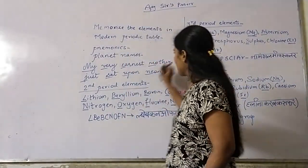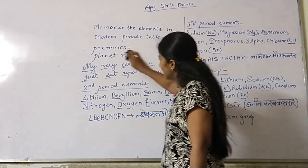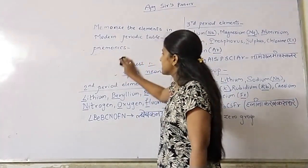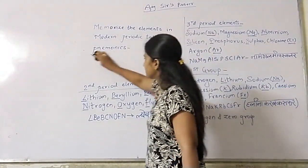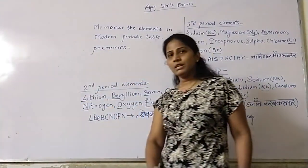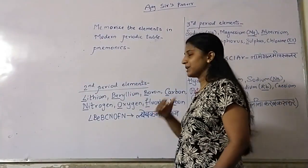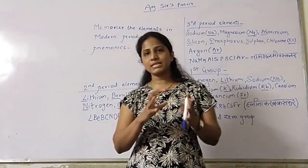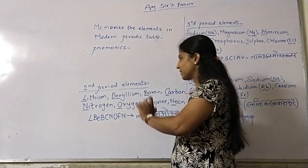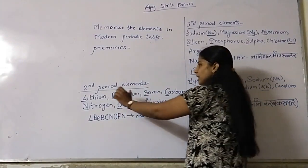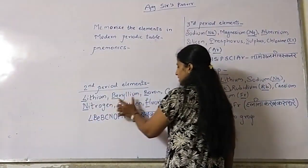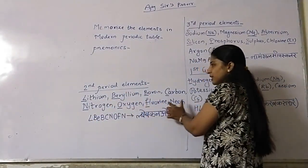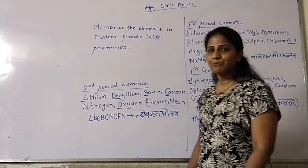So today we will use mnemonics to remember the names of the elements. Let us start with the second period. In the second period, there are 8 elements: Lithium, Beryllium, Boron, Carbon, Nitrogen, Oxygen, Fluorine, Neon. These are the second period elements.